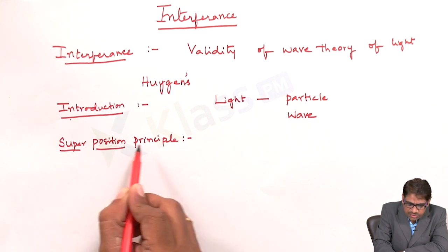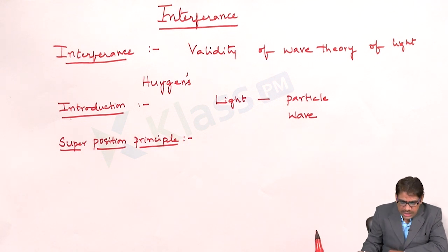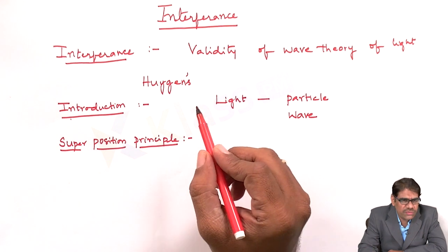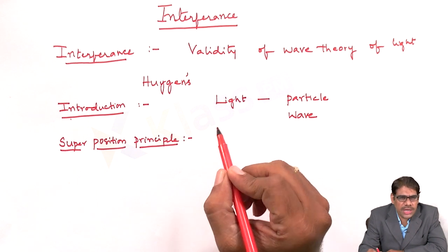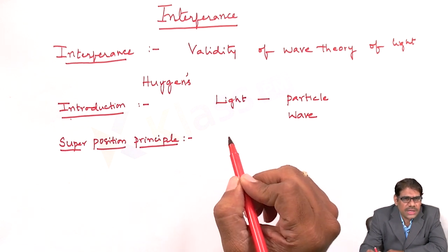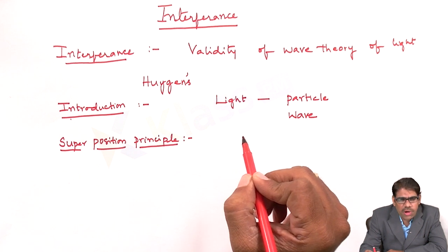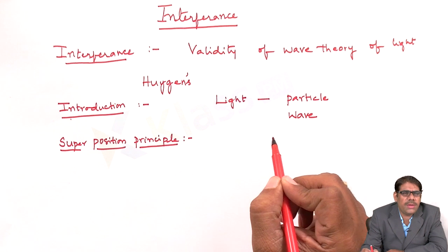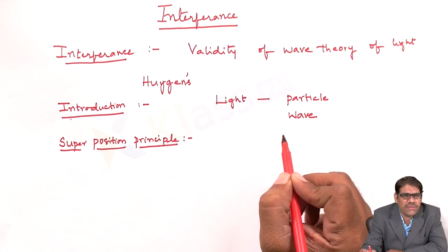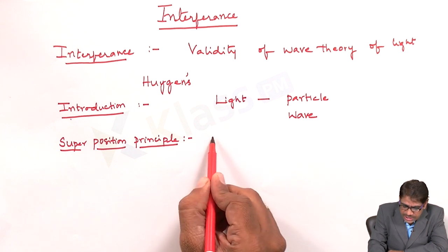The superposition principle is stated as follows: when two or more waves superimpose with respect to one another in a particular medium, the resultant displacement at any point in that medium is equal to the algebraic sum of the displacements of the individual waves.